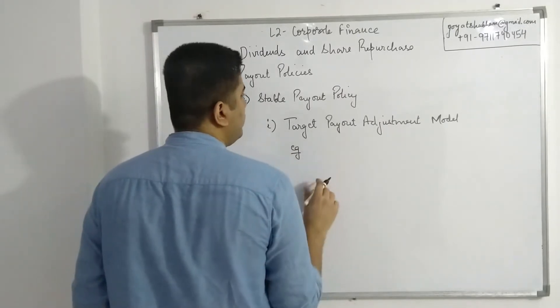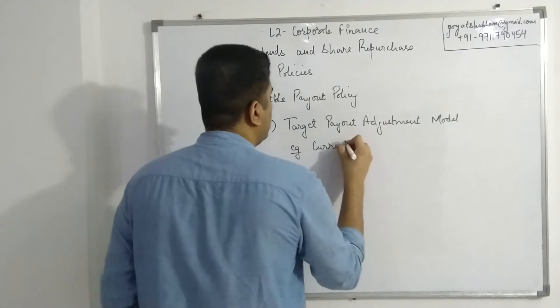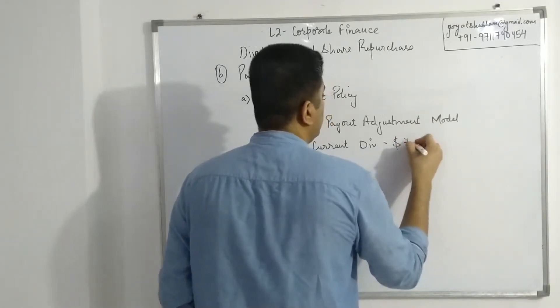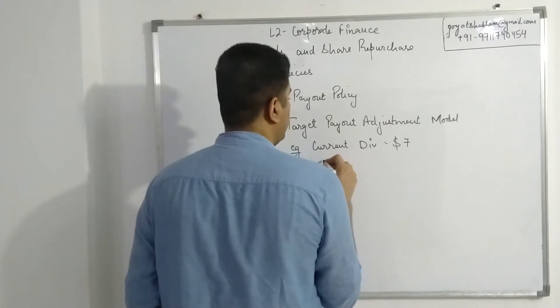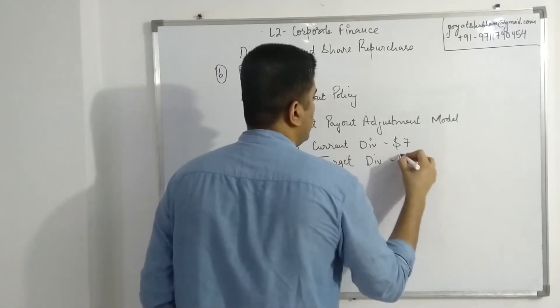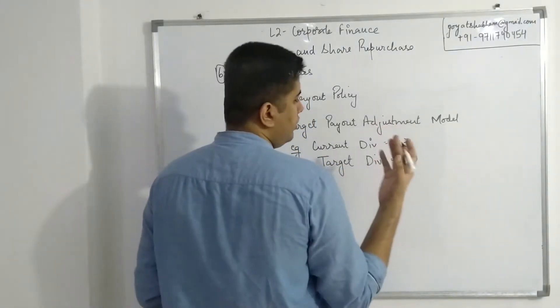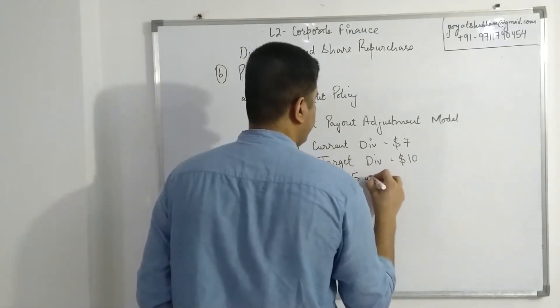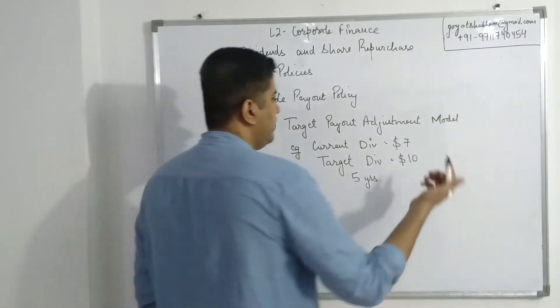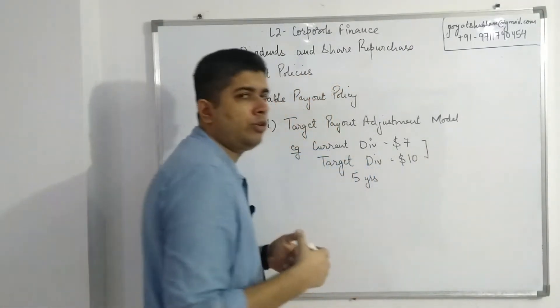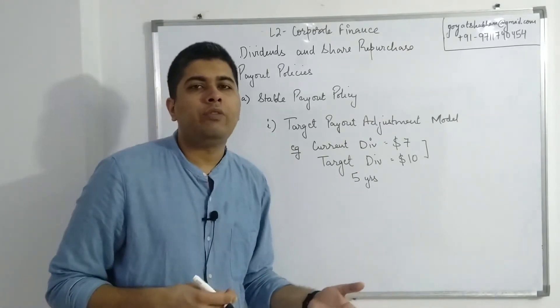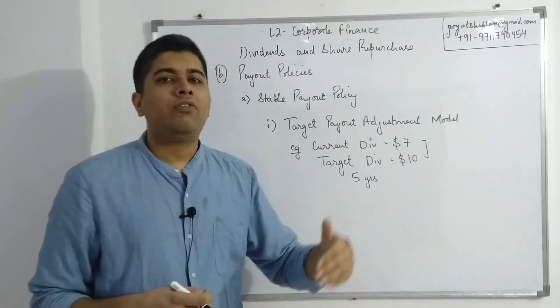Let's say right now the current dividend is $7, and the company wants to have a target dividend in the future of $10 over the course of five years. The basic calculation for target payout adjustment model is fairly simple. What's the difference between these two? I want to create a situation where my dividend is increasing from $7 to $10, but I don't want to do it immediately. I don't want to suddenly give people an impression that dividends have increased by around 40%.